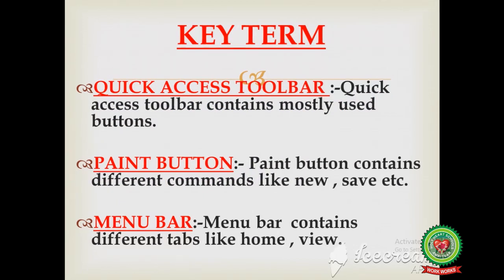Firstly, I will discuss some key terms with you. Number one: quick access toolbar — it contains mostly used buttons. Next: paint button — paint button contains different commands like new, save, etc. Next is menu bar — menu bar contains different tabs like Home and View.